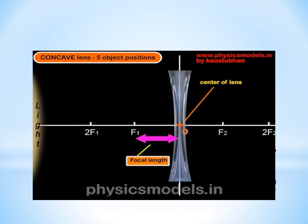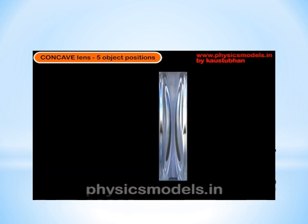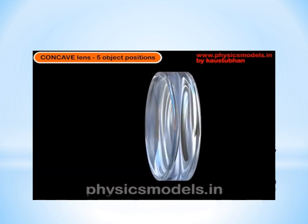Now the principal axis is very important. On that horizontal white line, we draw out F1 and 2F1. F1 is the focal point, at the focal length from O. Similarly, on the right hand side, we mark out F2 and 2F2.